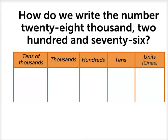Let's start by looking at the end of the number, 276. 276 means there are two hundreds, seven tens, which make the 70, and six units, or ones.